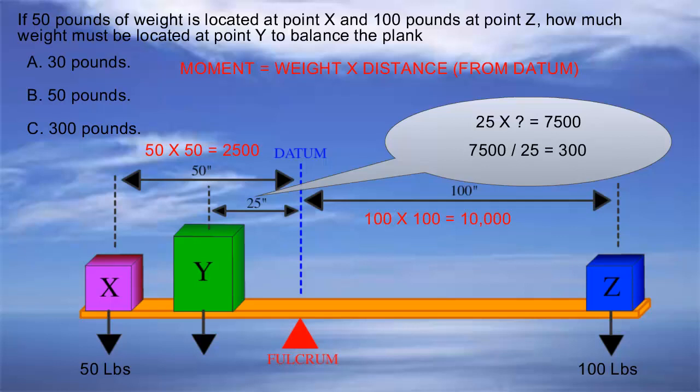To balance the plank, we need 300 pounds at location Y. 300 pounds, answer C, is the correct answer. But what if the question gave us all three weights and asked us to shift one to balance the plank? Let's look at the next slide to solve that problem.